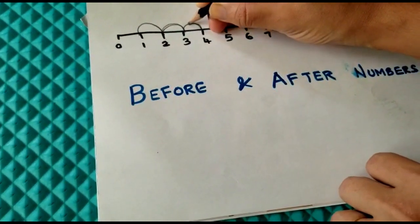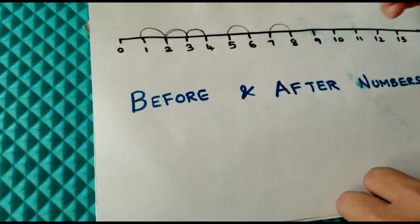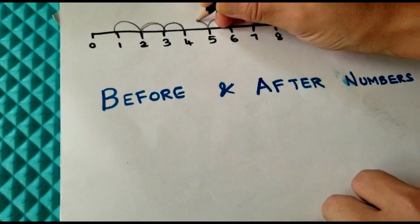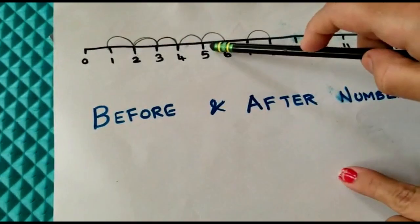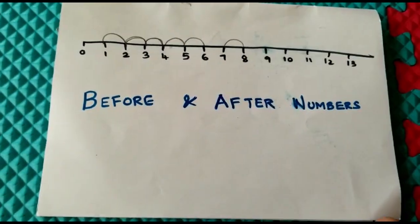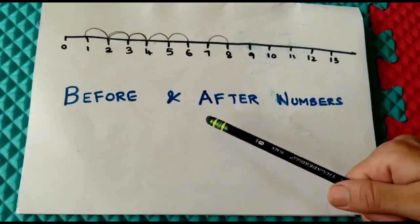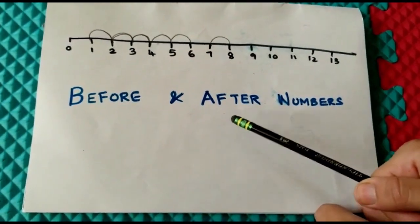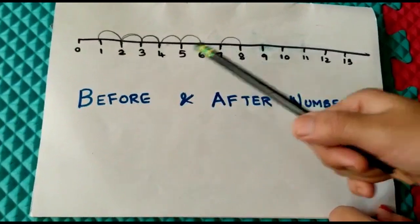What comes before 5? It's kind of a reverse thing. After numbers will be the first thing they will understand very easily, and then they will move on to the before number.